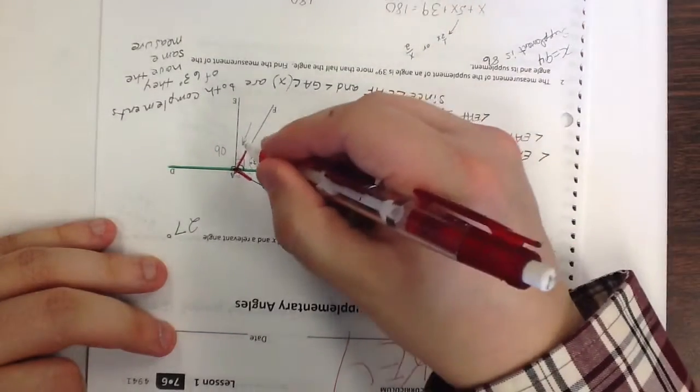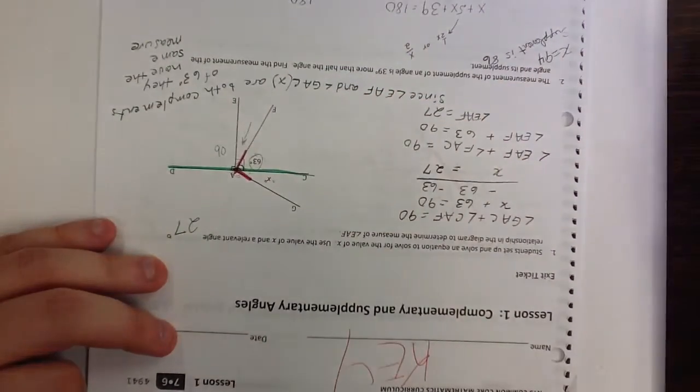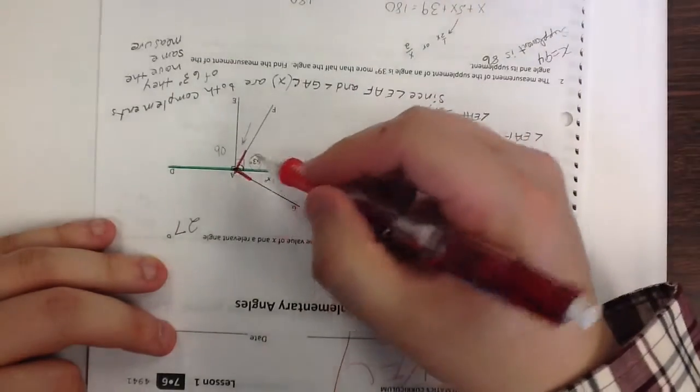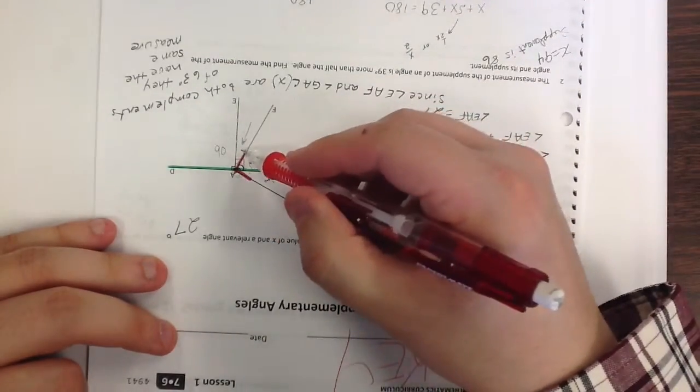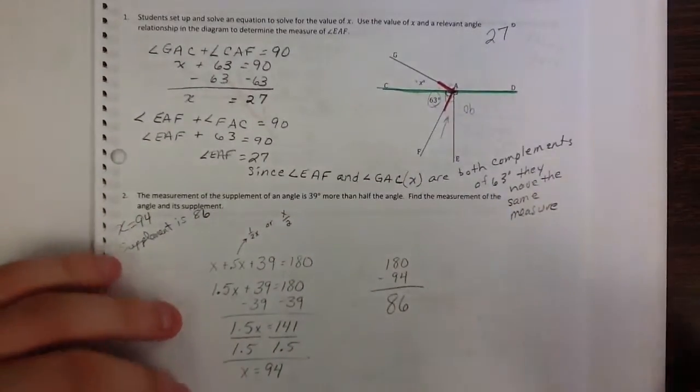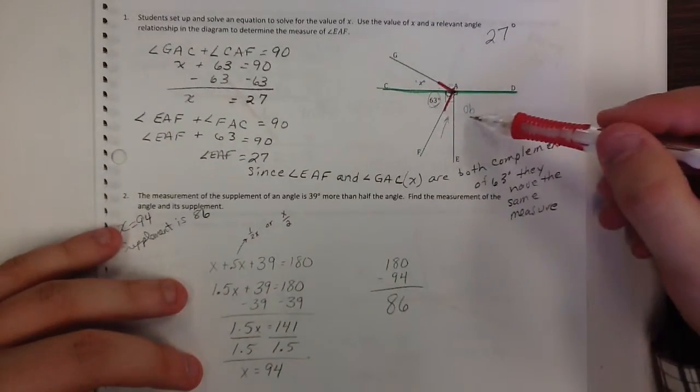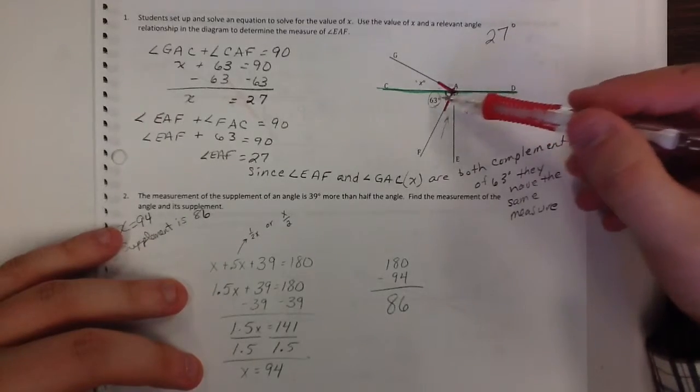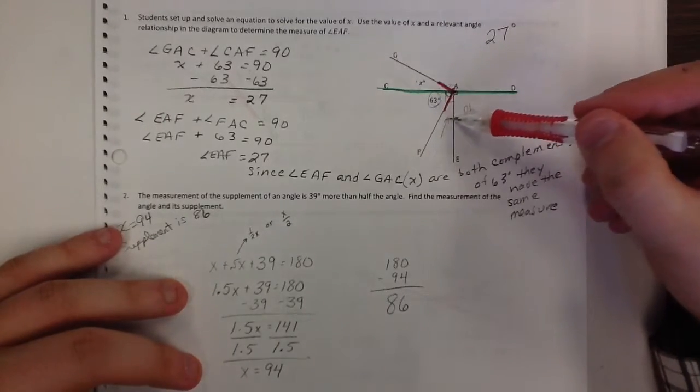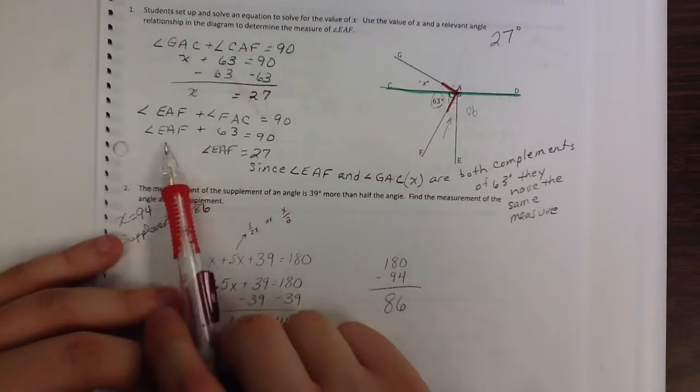So my 63 plus my unknown here, okay, is going to get, or 63 plus my 90 plus my unknown here is going to equal 180, okay? If I take out this 90, I know this is a right angle, so just 63 plus this unknown will give me 90 as well. So that's what I have here. My unknown is angle EAF. I'm adding that to 63.